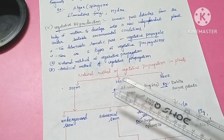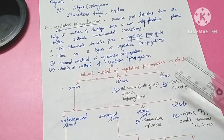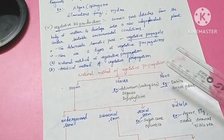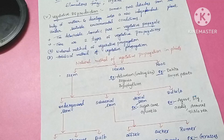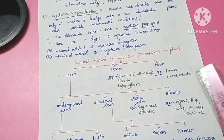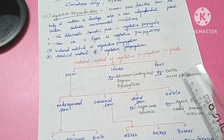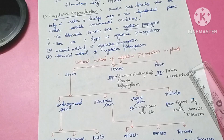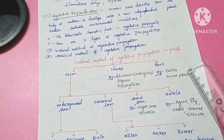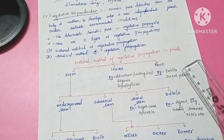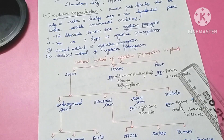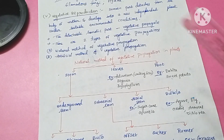In natural vegetative propagation through roots, examples include Dahlia, sweet potato, and wheat, where roots undergo vegetative propagation to develop new plants.